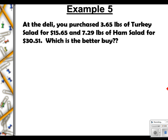Okay, here's another example. Why don't you go ahead and try this one out on your own? Pause the video any time. And then unpause it when you're ready to check it. And see how you did. Okay? So at the deli, you purchased 3.65 pounds of turkey salad for $15.65. And 7.29 pounds of ham salad for $30.51. That's a lot more. That's almost double what you're paying for this turkey salad. That looks like you're paying way too much. But let's figure this out. Let's be good consumers here and figure out what these numbers really come out to, which is the better buy.